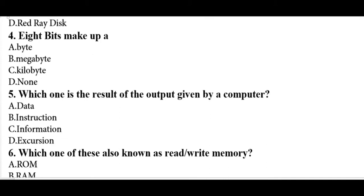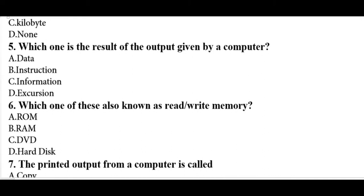Question four: 8 bits make up a byte — just as 4 bits make up a nibble. Question five: which is the result of the output given by a computer? Information is the result of output given by a computer. Data, instructions, and recursion do not form the result output of a computer.